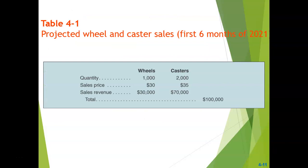Let's look at an example. Consider projected wheels and casters for a company for the first six months of 2021. The company is selling wheels and casters, and the projection is that one thousand wheels and two thousand casters will be sold. The sales price is thirty dollars per unit for wheels and thirty-five dollars for casters, giving sales revenue of thirty thousand dollars for wheels and seventy thousand for casters, for a total of one hundred thousand dollars.